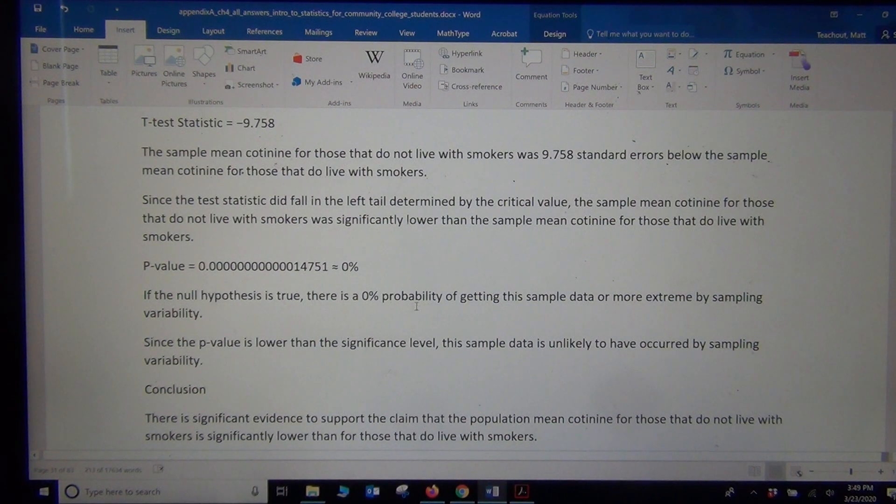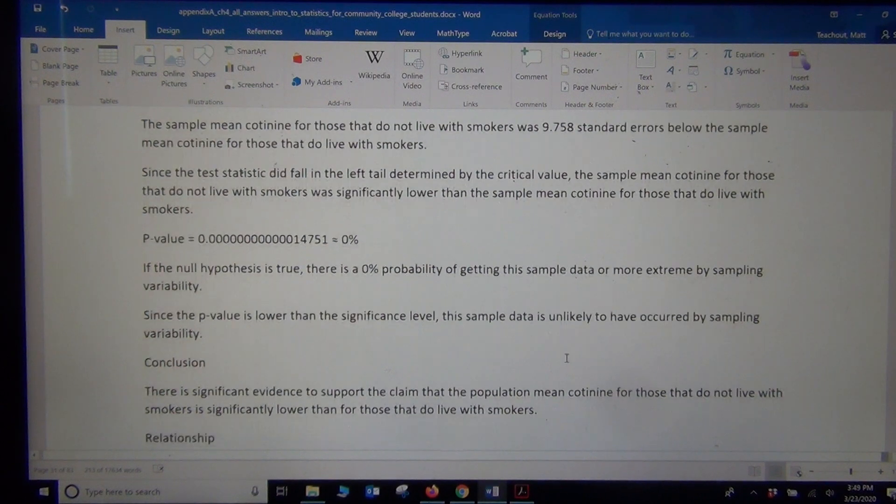Our p-value was really close to zero. So if the null is true, there's a 0% probability of getting the sample data more extreme by sampling variability. We've got a low p-value. So it's very unlikely to have occurred by sampling variability.